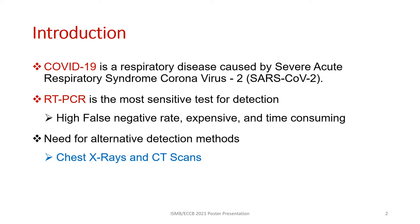COVID-19 is an infectious disease caused by the SARS-CoV-2 virus, which is a strain of coronavirus. RT-PCR is the gold standard in the diagnosis of COVID-19, but the results of an RT-PCR test may take several hours to be available, it has a high false negative rate, and it is expensive as well.